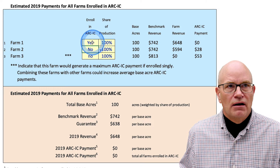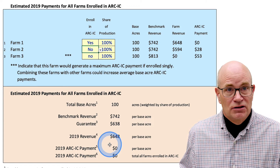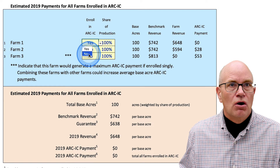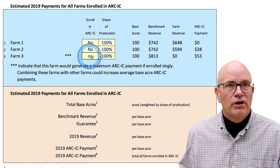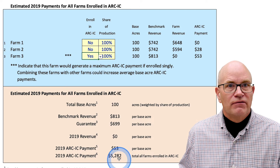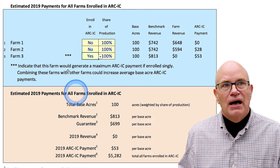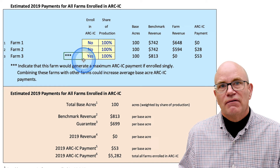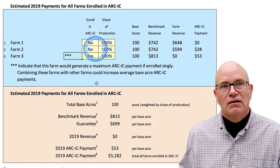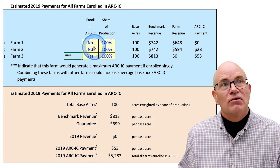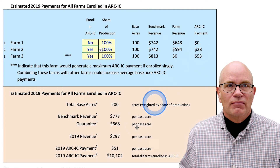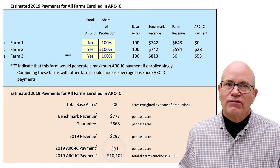If you enroll only Farm 1 in ARC-IC it will make $0 payments. If we instead enroll Farm 3, it will make a $53 payment. This farm happens to be above the ARC-IC guarantee, and that's important because when we combine it with another farm — Farm 2, which had a $28 payment — the two together make a $51 payment.